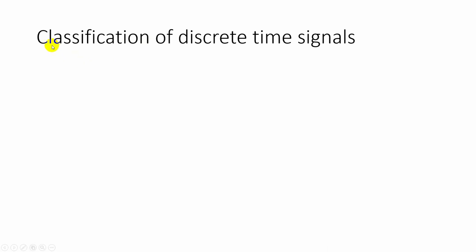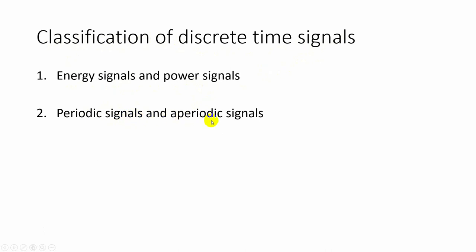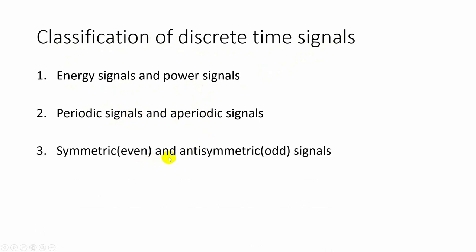Now we are going to see the classification of discrete time signals. They are: energy and power signals, periodic and aperiodic signals, and symmetric and antisymmetric signals, also called even and odd signals.